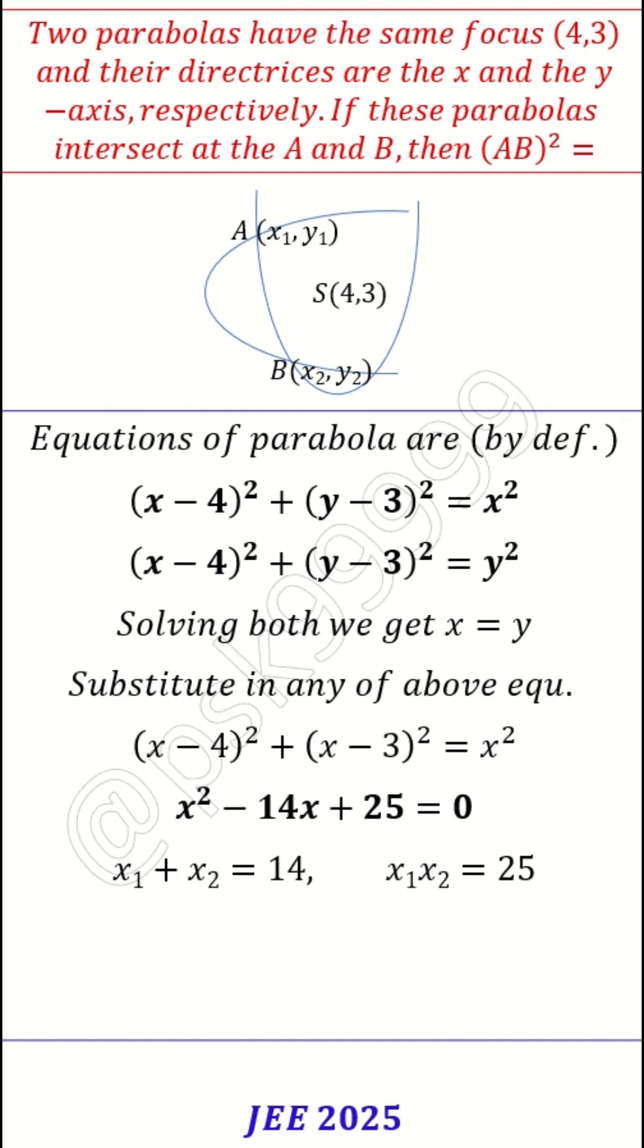Now I have the two points; x coordinates are there. Now AB square is nothing but x2 minus x1 whole square plus y2 minus y1 whole square. But in this case, x and y are same actually.